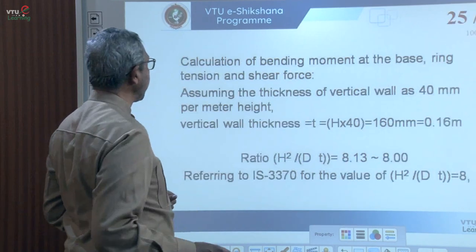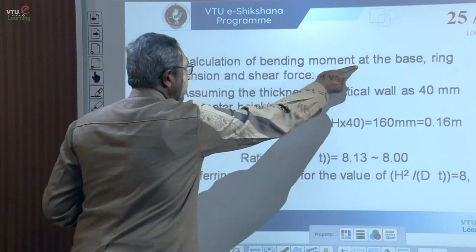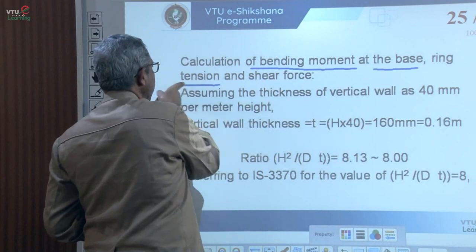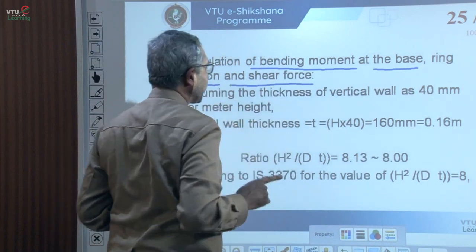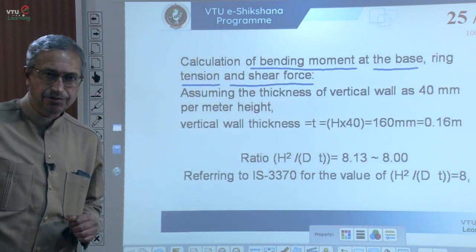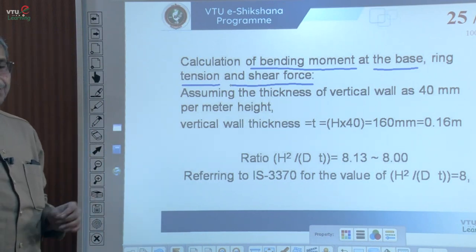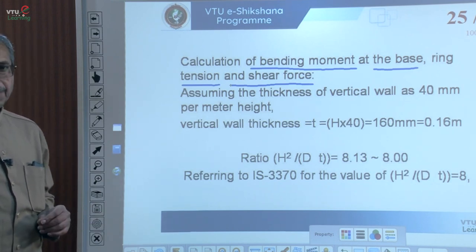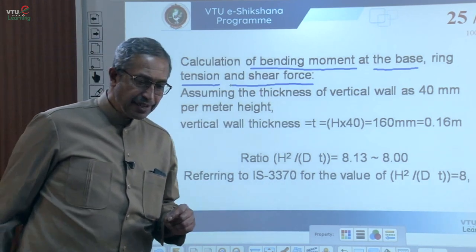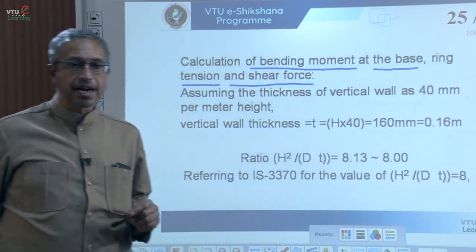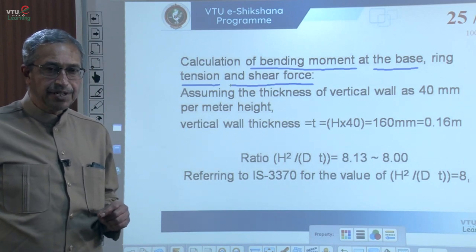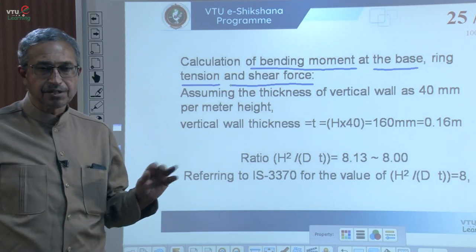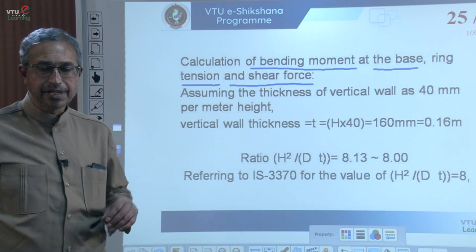Next, calculation of bending moment at the rigid base, ring tension and shear force. Because of the rigid base, there is a transfer of moment from the vertical wall to the base level. The difference between flexible and rigid base is that in flexible base there is no base moment, whereas in a rigid base there is bending moment at the base.